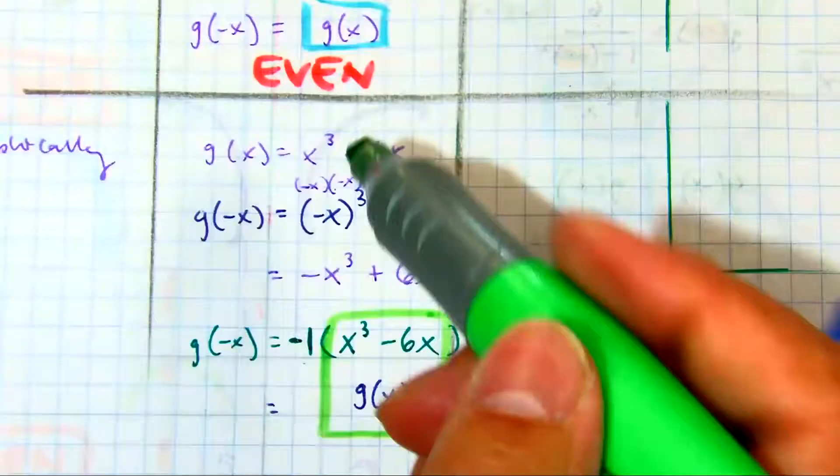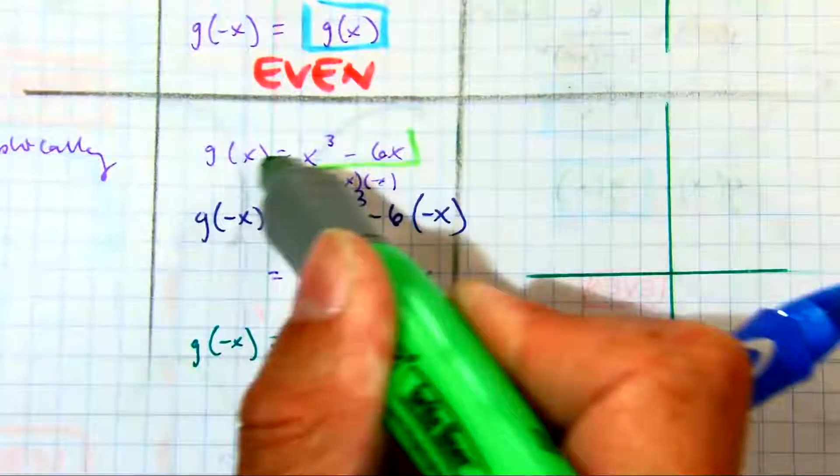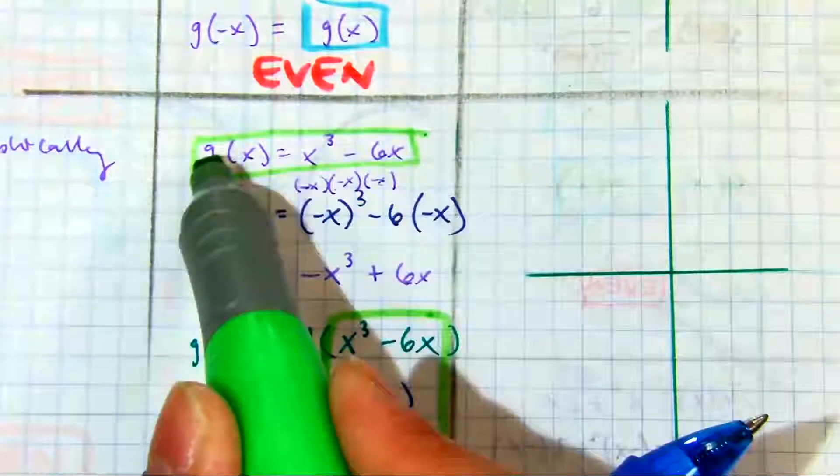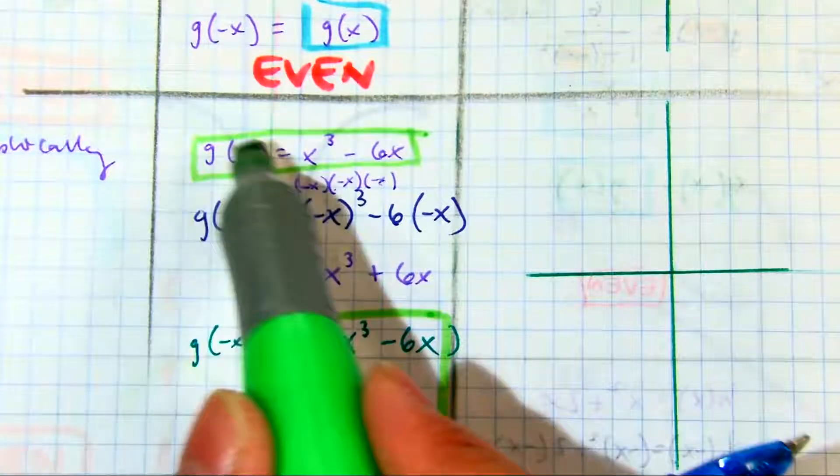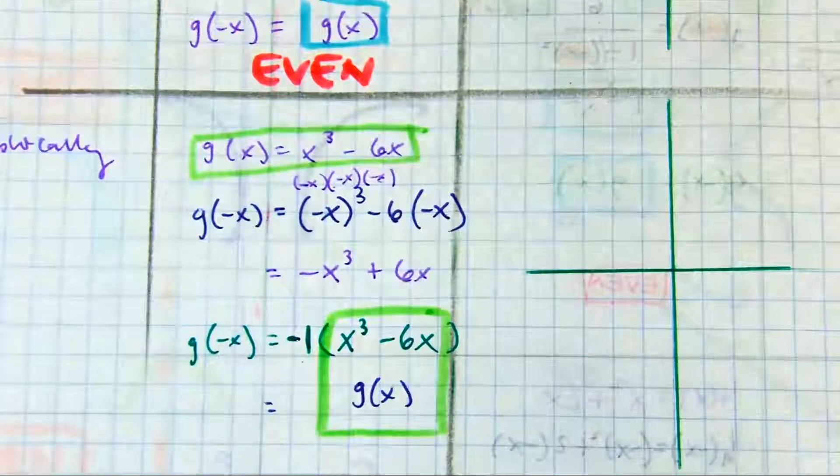Every time you see x cubed minus 6x, you can write g of x. Every time you see g of x, you can write x cubed minus 6x. So, we're doing a substitution.